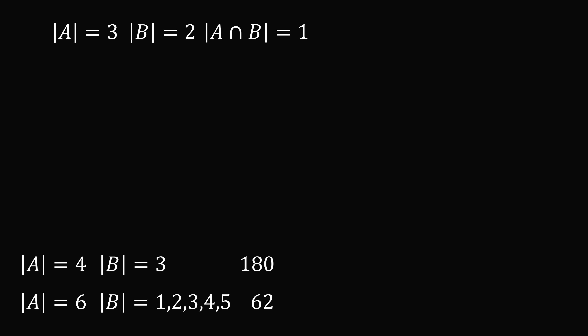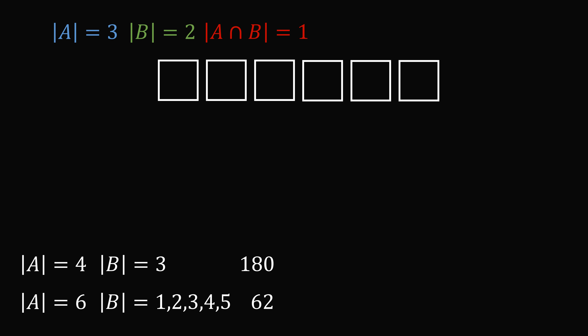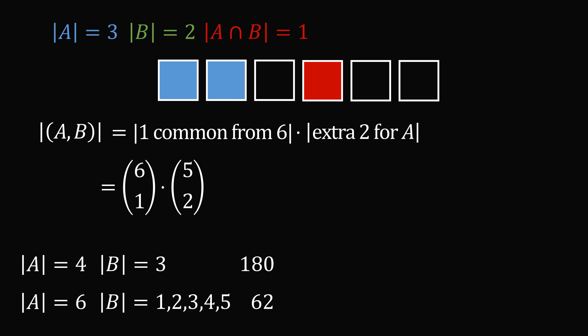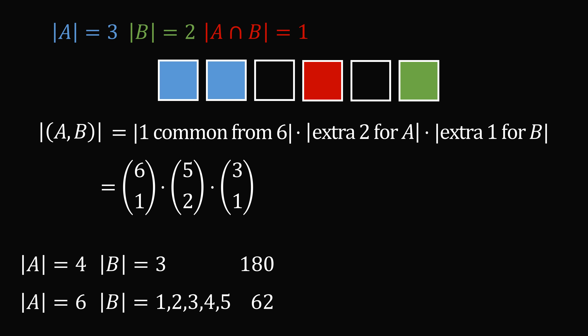The third case: |A| = 3, |B| = 2, and |A∩B| = 1. From 6 elements in S, first pick the 1 common element: 6 choose 1 = 6 ways. Then pick 2 more from the remaining 5 to complete A: 5 choose 2 = 10 ways. Then pick 1 more from the remaining 3 to complete B: 3 choose 1 = 3 ways. So we have 6 × 10 × 3 = 180 ordered pairs.